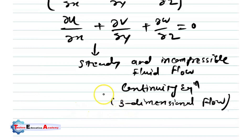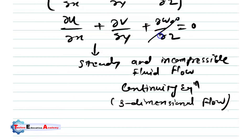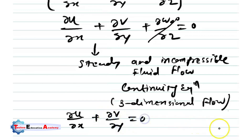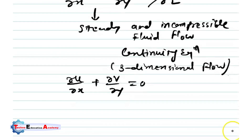We can also write the equation in the form of 2D flow. We neglect the z-direction term, giving: ∂u/∂x + ∂v/∂y = 0. This is the continuity equation for steady and incompressible flow in two dimensions.